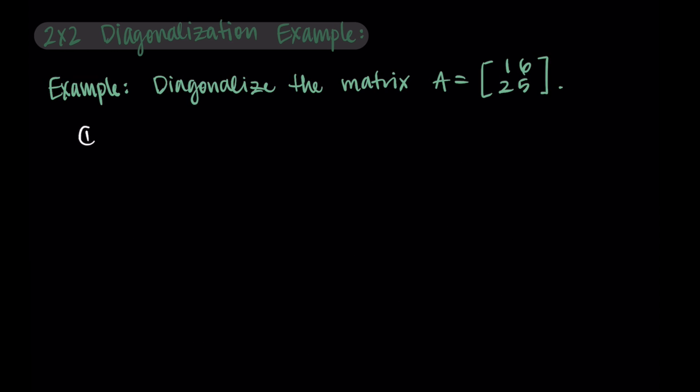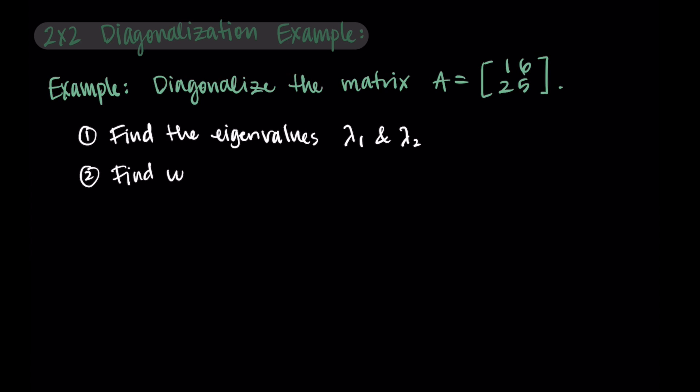Our process for doing the diagonalization is to first find the eigenvalues lambda 1 and lambda 2. We do this first, and if we don't get two distinct ones, then diagonalizing isn't possible and we can't continue. But I did set this up so that this is going to work, so we're going to find our two eigenvalues lambda 1 and lambda 2. Then we're going to find corresponding eigenvectors for both of these eigenvalues. There are an infinite number of eigenvectors for each eigenvalue, but we're just going to choose two specific ones to use for the diagonalization.